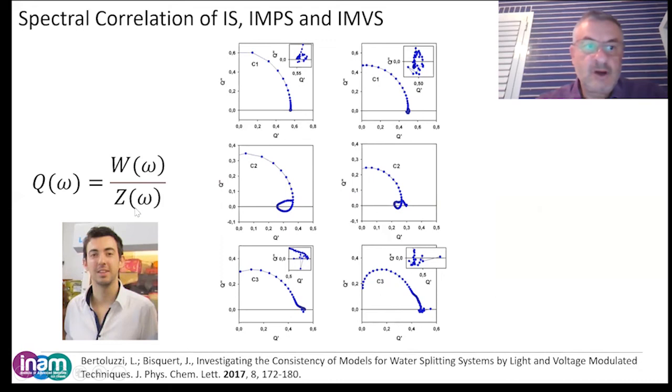So many years back it was shown by Luca Bertoluzzi very generally that for measurements that are done on the same condition, the three transfer functions must hold this identity where Q equals W divided by Z.